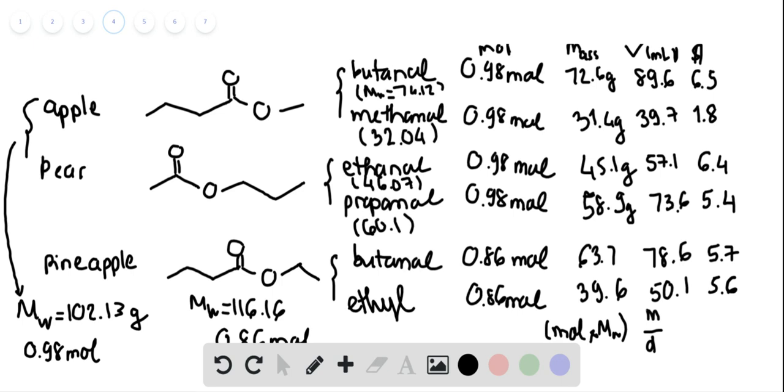Apple is made from butanol and methanol, pear is made from ethanol and propanol, and pineapple is made from butanol and ethanol. So you can see that these two have the same molecular weight.